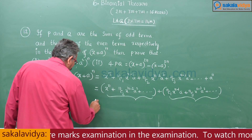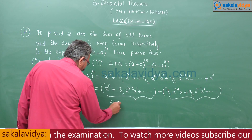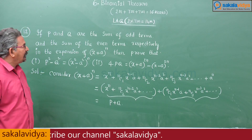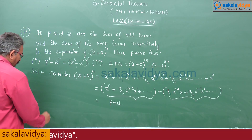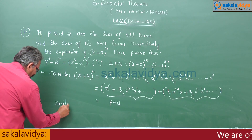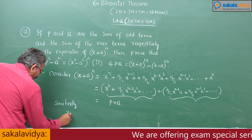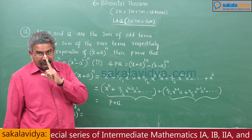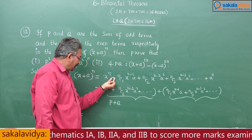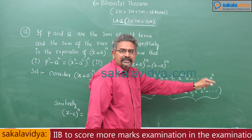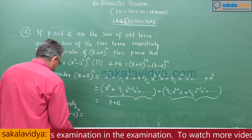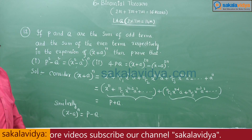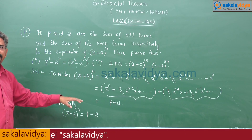According to the problem, the odd terms group is P and the even terms group is Q. So (x + a)^n = P + Q. Similarly, if you consider (x - a)^n, only the signs of alternate terms change — minus, plus, minus, plus — so (x - a)^n = P - Q.